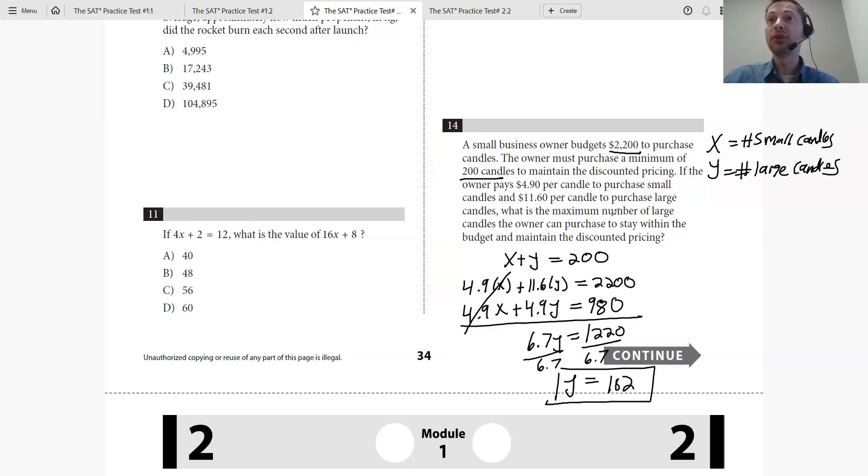What is the maximum number of large candles? So they're looking for large candles. Large candles are Y. We already got Y. Y is 182. That's the answer.